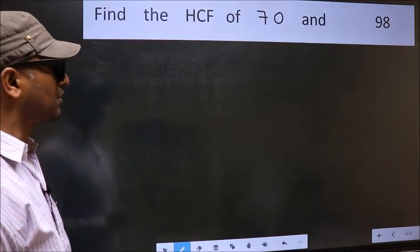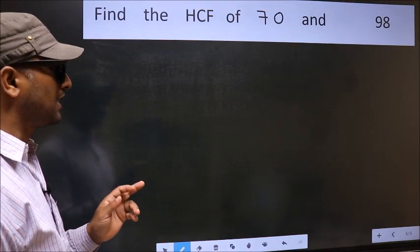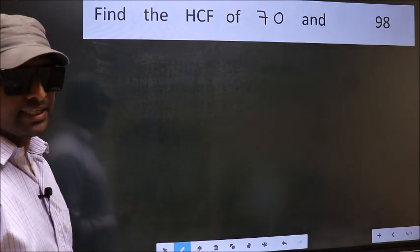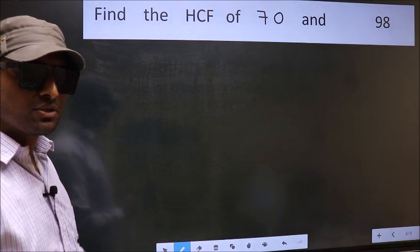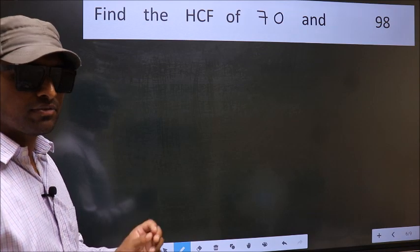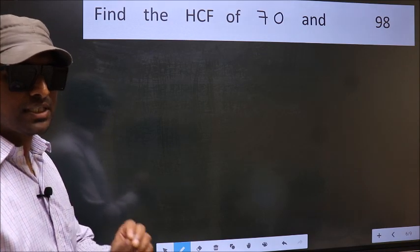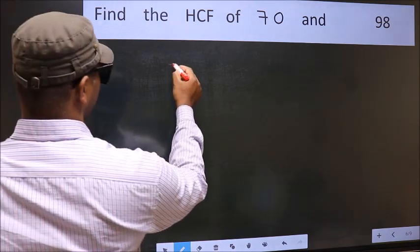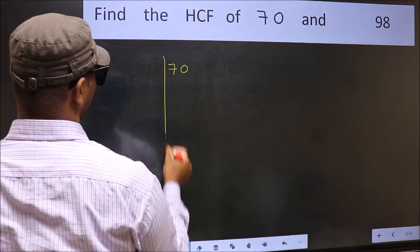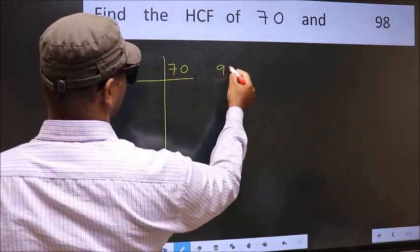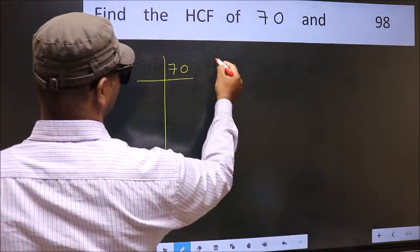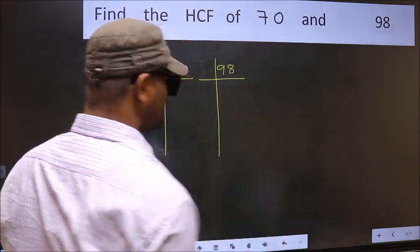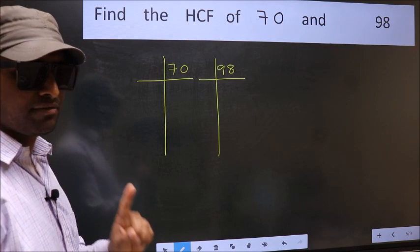Find the HCF of 70 and 98. To find the HCF, we should do the prime factorization of each number separately. That means we factorize 70 and 98 individually. This is step 1.